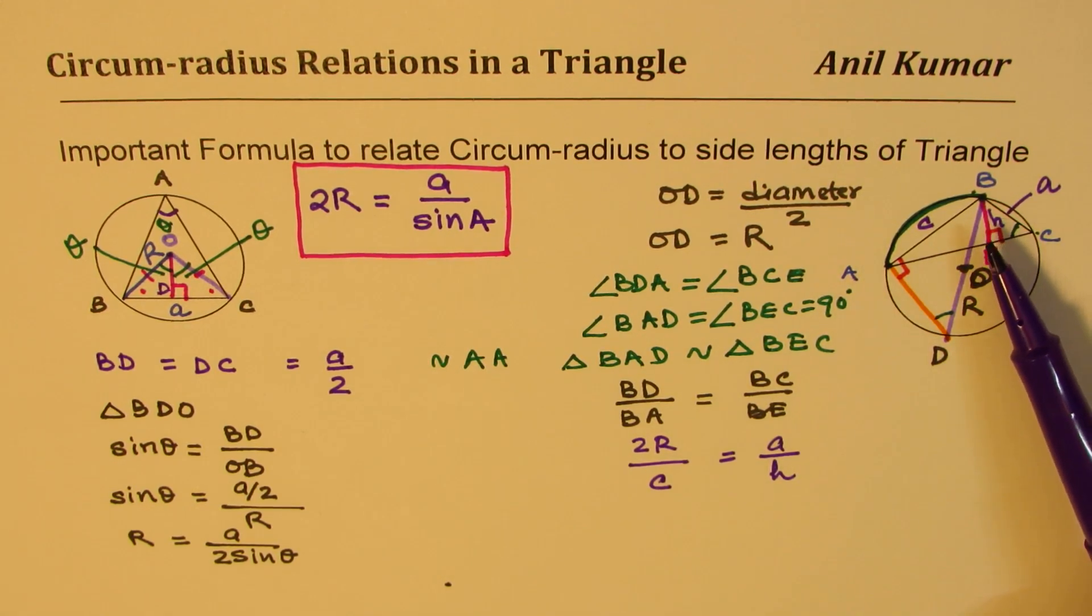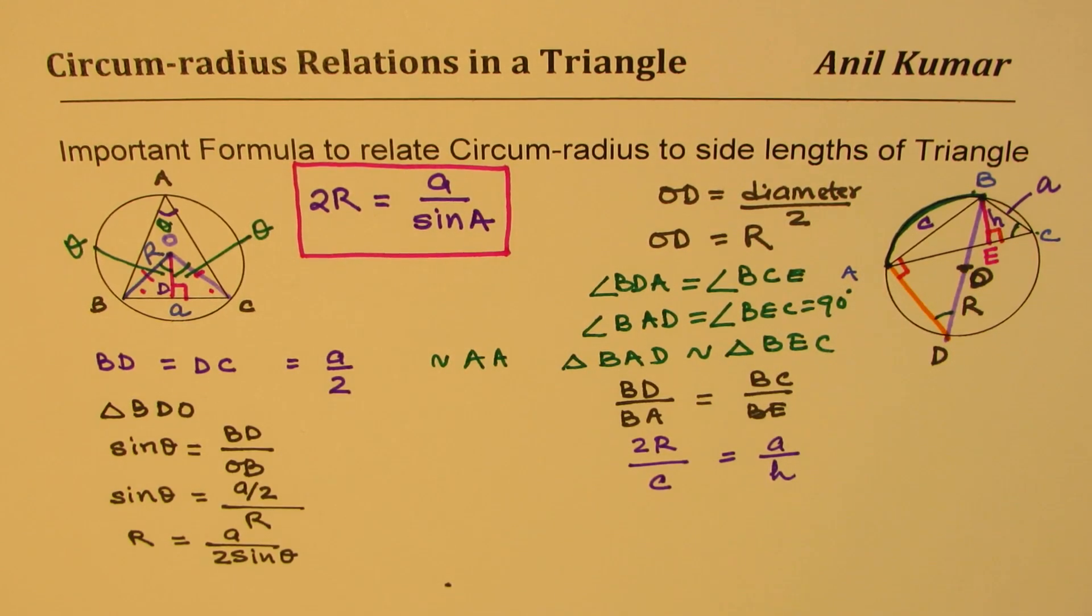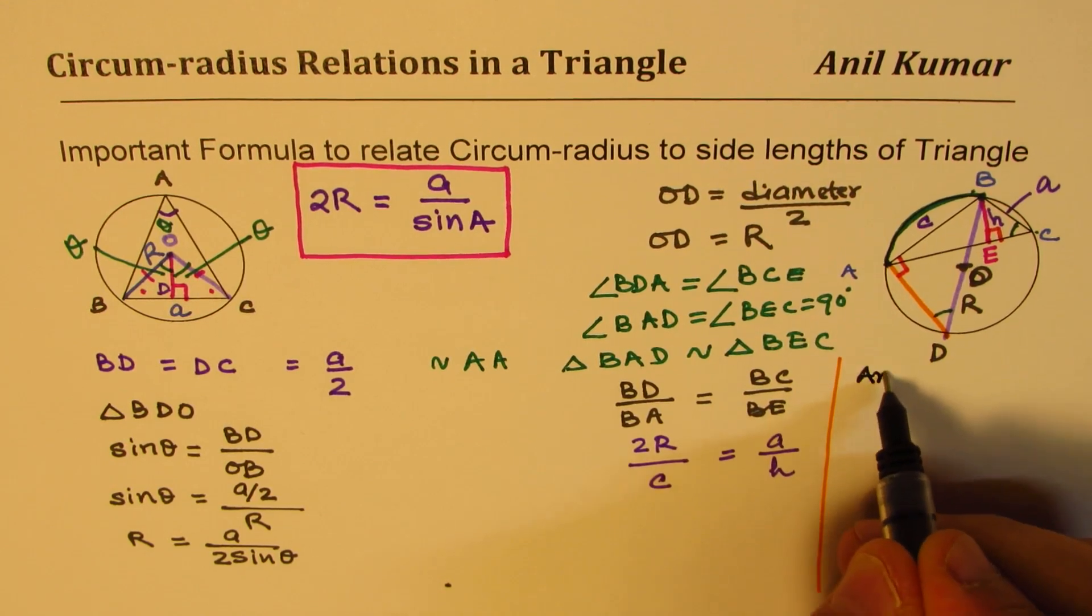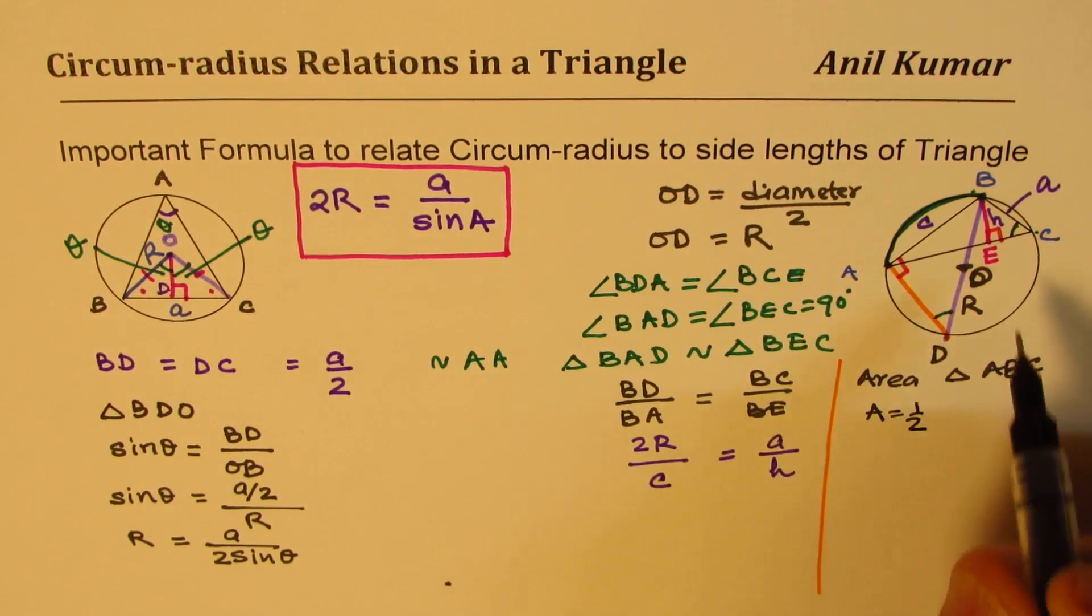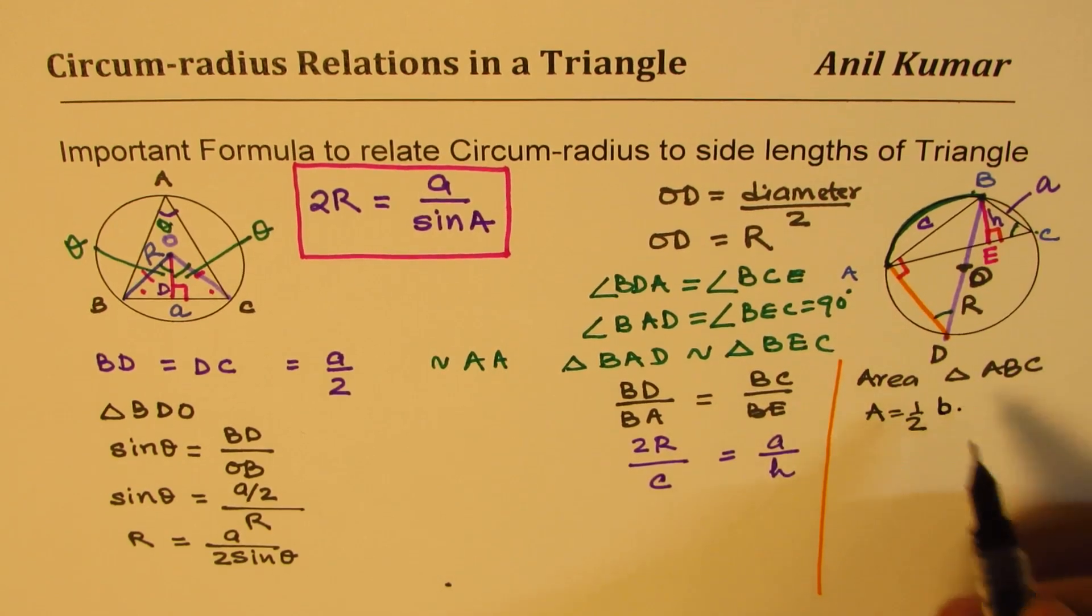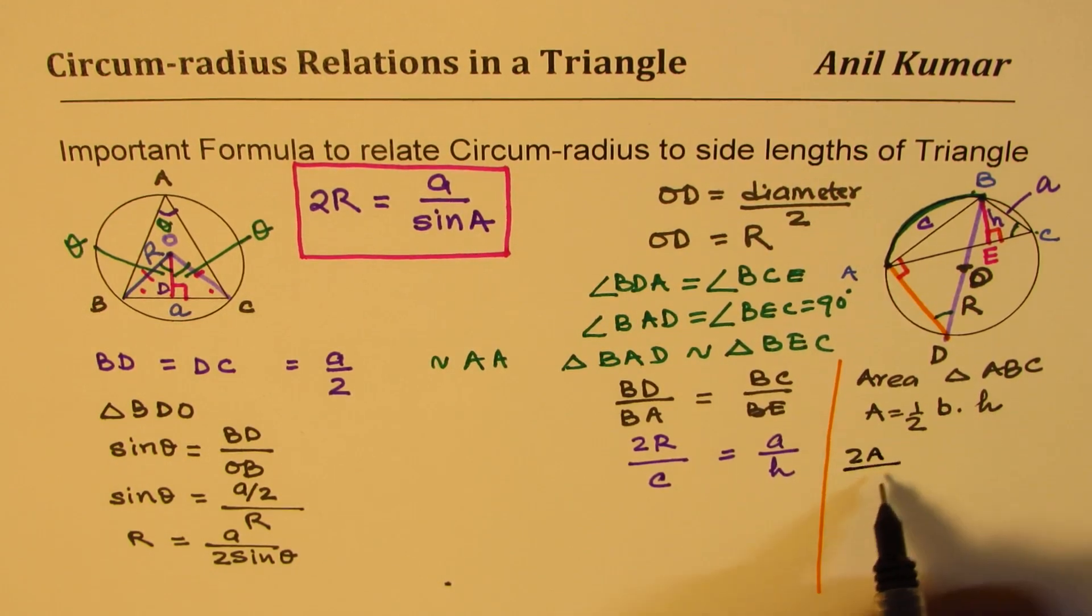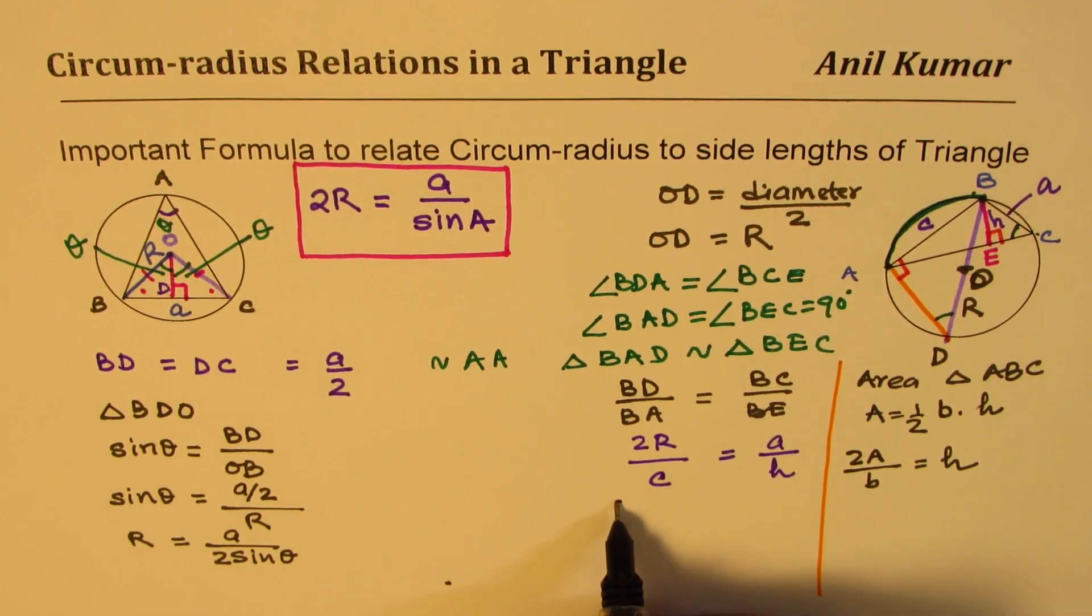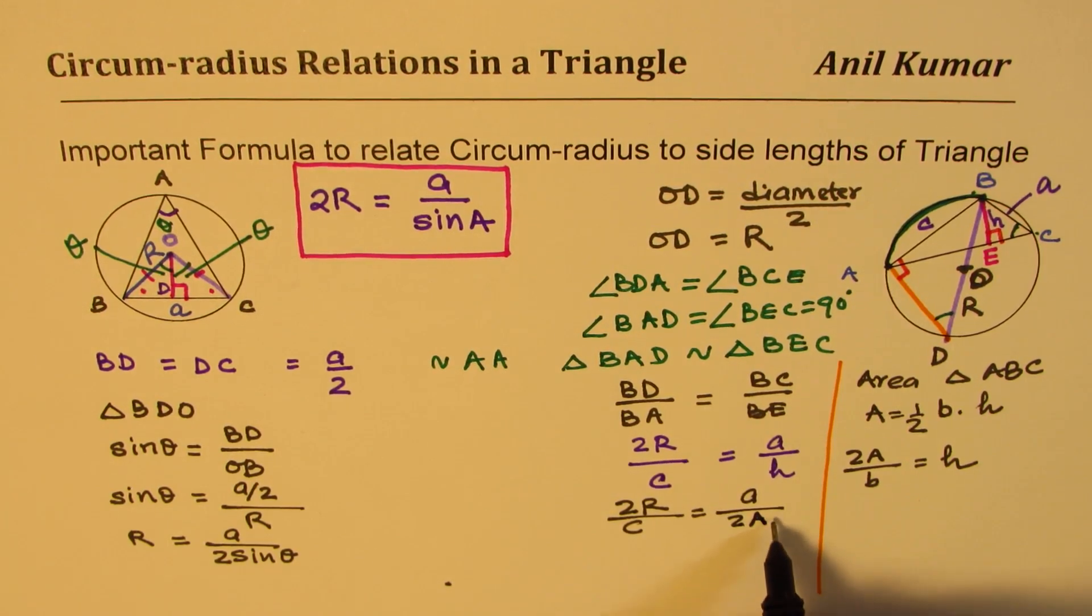Now, this height H, we can relate with the area of the triangle. For the triangle ABC, what is the area? The area is half of base AC, which is b, times height H. From here, I can write that height is 2A divided by b. Now, replacing that height in this formula, we get 2R over c equals to a over, instead of height, I'm writing twice area over b.